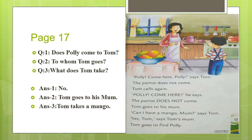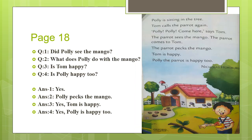Now let's move to page number 18. Polly is sitting in the tree. Tom calls the parrot again: Polly, Polly, come here, says Tom. The parrot sees the mango. The parrot comes to Tom. The parrot pecks the mango. Tom is happy. Polly the parrot is happy too. I hope you have understood page 18.